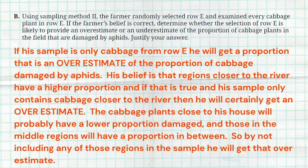So I wrote that pretty clearly here. If his sample's only cabbage from row E, he will get a proportion that's an overestimate of the proportion of cabbage damaged by aphids. His belief is that the regions closer to the river have a higher proportion, and if that's true and his sample only contains cabbages closer to the river, then he's going to get something that's an overestimate of what's true for the entire farm. The cabbage plants closer to his house are probably going to have a lower proportion that are damaged. Ones in the middle are probably going to have something in between. So by not including any of those regions, his sample will be that overestimate.